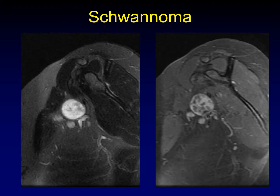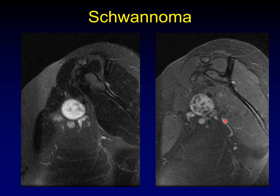The most common neoplasm we encounter in the brachial plexus is a schwannoma, and a schwannoma in the brachial plexus looks just like a schwannoma everywhere else. It's going to be bright on T2 and heterogeneously enhancing on post-contrast imaging. These tend to be elongated oval objects. So if it looks like the schwannomas you see everywhere else but it's in the brachial plexus, it's probably a schwannoma of the brachial plexus.